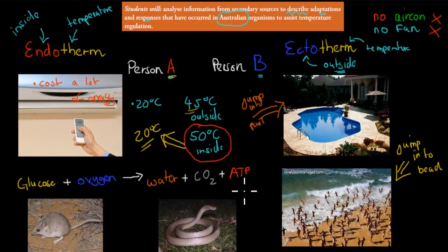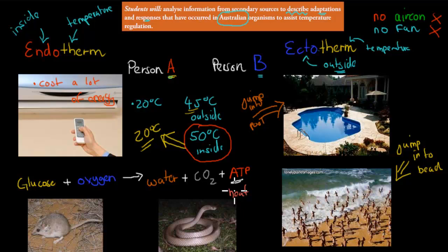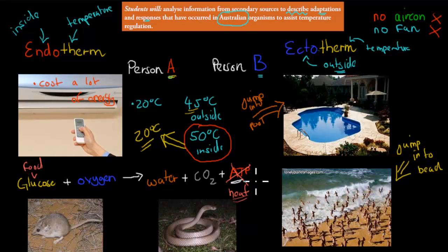The same applies to keeping our inside temperature constant. This is the equation for cellular respiration: glucose plus oxygen makes ATP, and also produces water and CO2 as a by-product. ATP is used for energy, but for endotherms they can do something else as well — they can actually produce heat. So instead of producing ATP, they can use that glucose — their food — to produce heat instead. And that heat helps them to keep a constant internal environment.